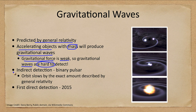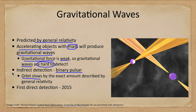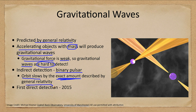The earliest detection was in a binary pulsar. This did not directly prove gravitational waves, but it was found that the two stars orbiting each other were losing energy by the exact amount expected by general relativity. We could detect their pulses, and as they slowed down, we could calculate that their orbit was slowing by the exact amount described by general relativity.